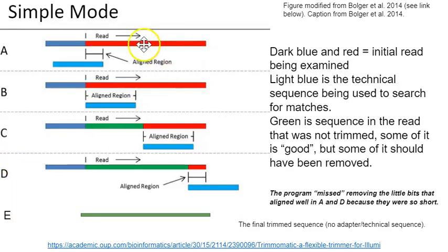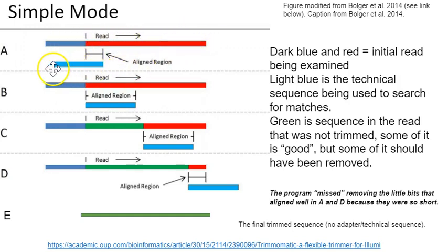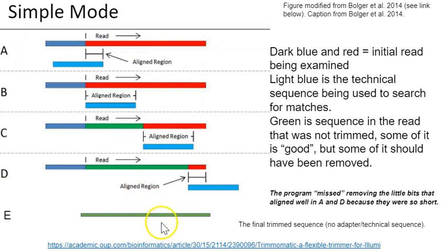In Simple mode, here we've got a read headed in one direction. In this light blue area, this is what you're holding up for comparison — what you're telling Trimmomatic the adapters should look like. Trimmomatic takes the read information, holds up what it's looking for, and marches it along looking for areas of alignment. Anywhere it sees an alignment, it will chop out that data. Anywhere that is not aligned, it will leave it behind, because that's actual biological sequence data.